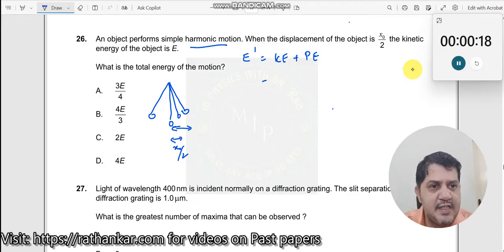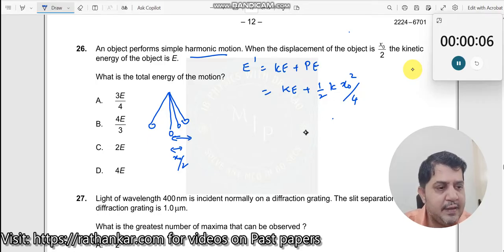What is potential energy? Kinetic energy is just kinetic energy itself, plus potential energy is half k x₀² divided by 4. I'll write it like this.